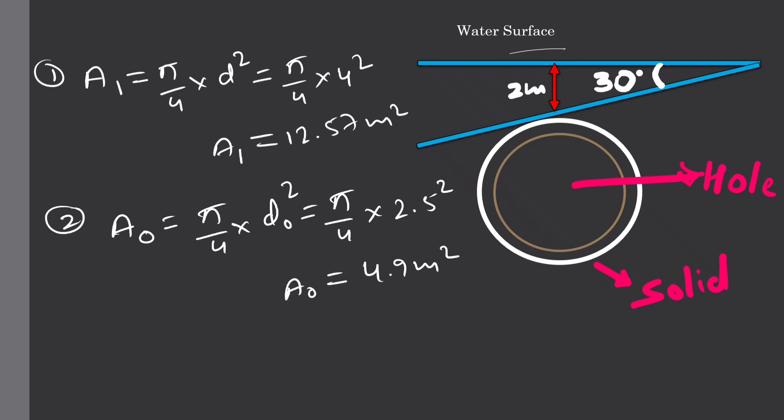Net area A equals A₁ minus A₀. This is equal to 12.57 minus 4.9. Therefore, we will get a total net area equals to 7.67 square meters.